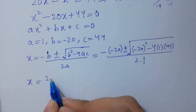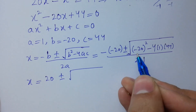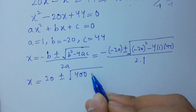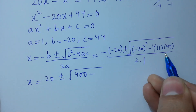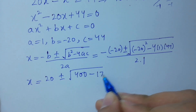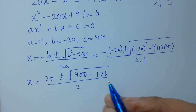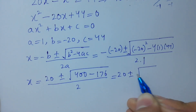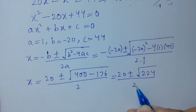We get minus minus plus 20, plus or minus square root of b squared, which is 400, minus 4 times 1 times 44, which is 176, over 2. So we have 20 plus or minus square root of 400 minus 176, which gives square root of 224, over 2.